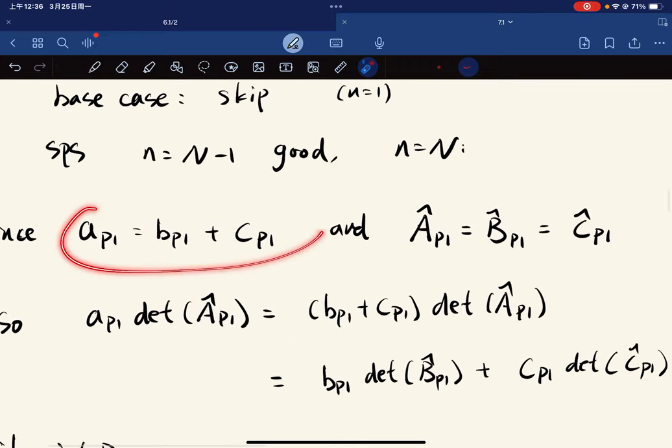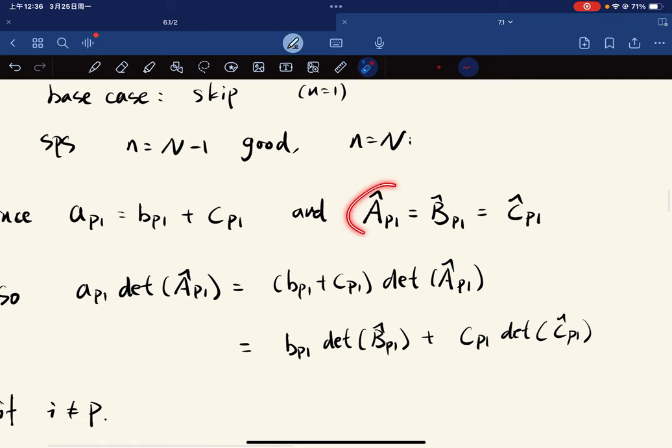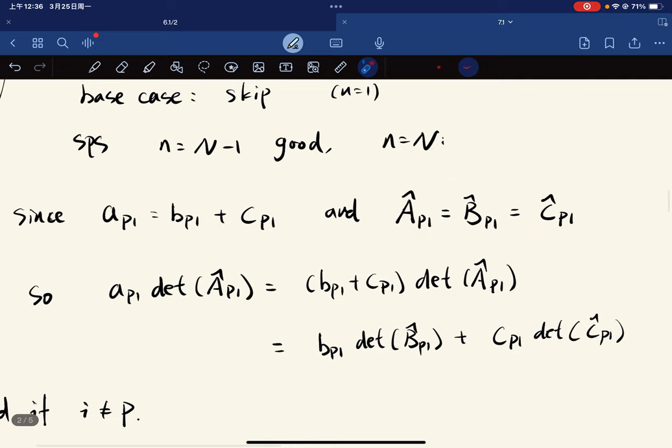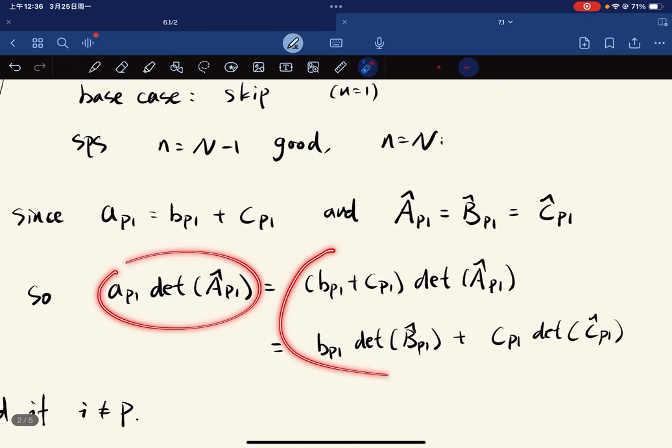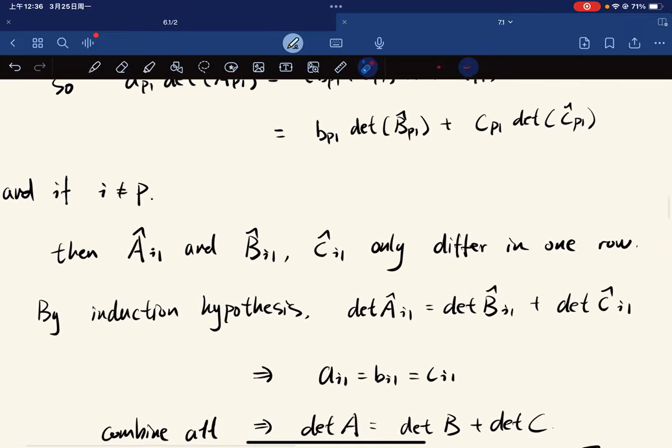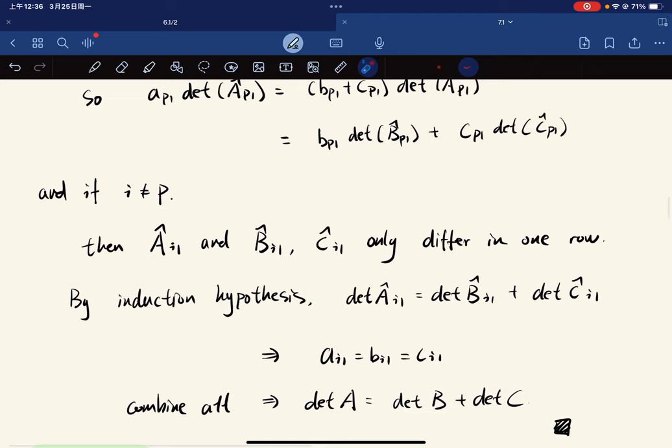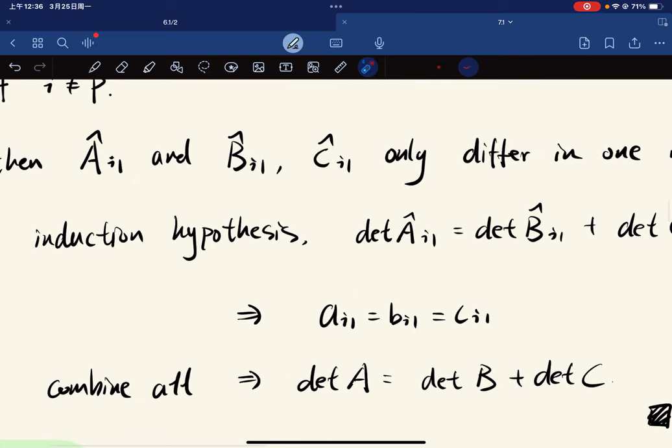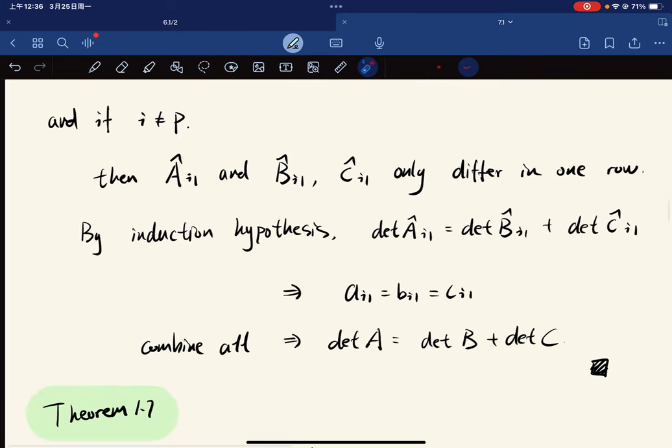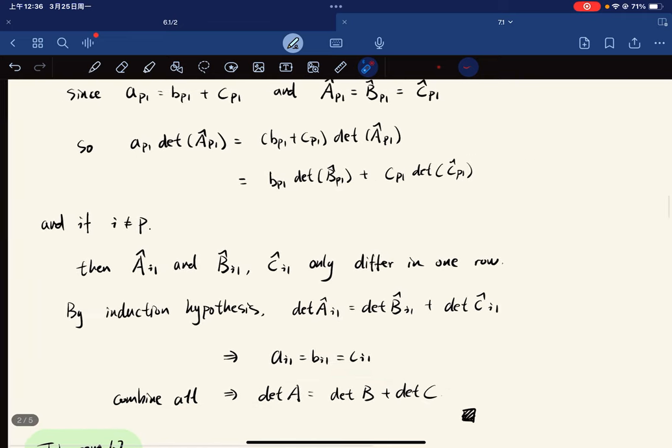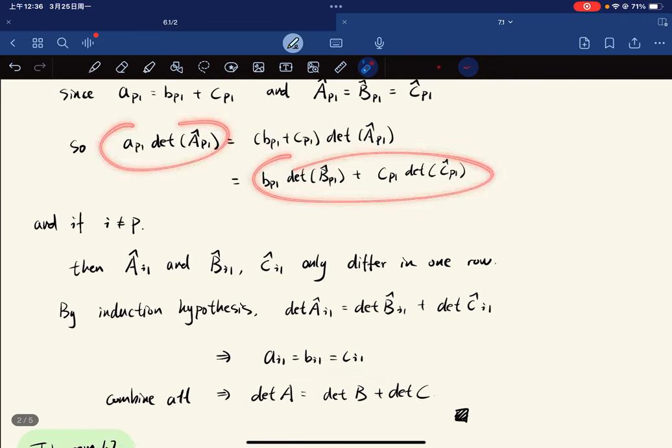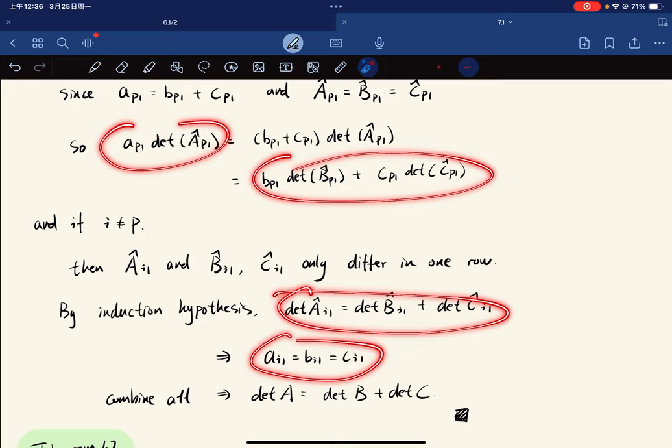So we have this, right? And their deletion matrices are the same. So we can have this algebra. And if i is not equal to p, then they can only differ in one row, right, by induction hypothesis. We're good. And so far, also we have this. So combine all of them, they're the same. We got this. And we have this. So we're good.